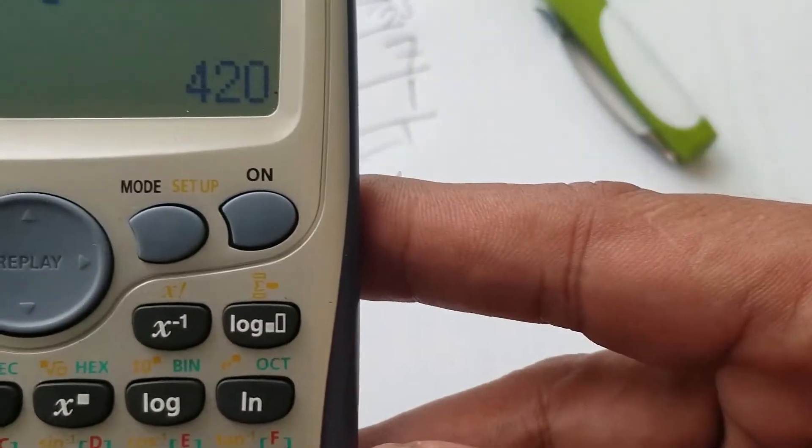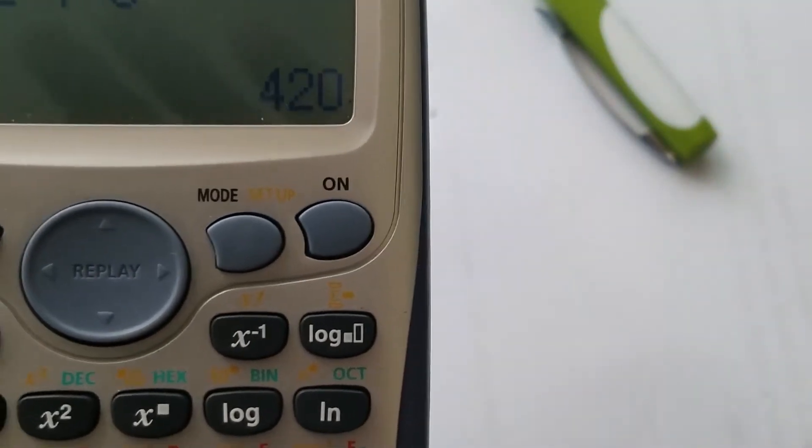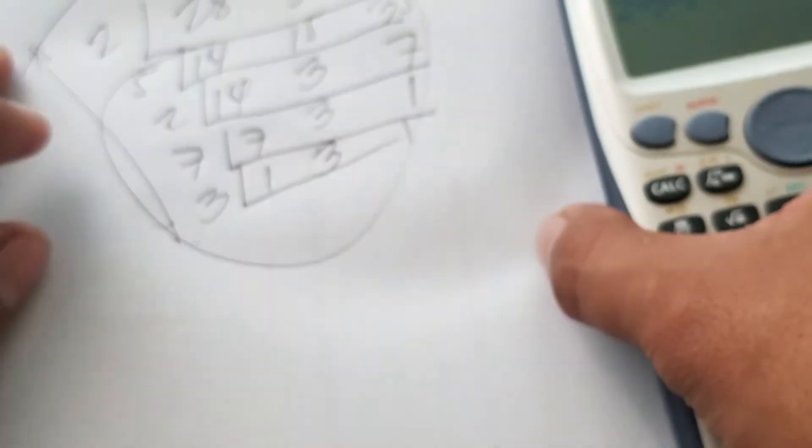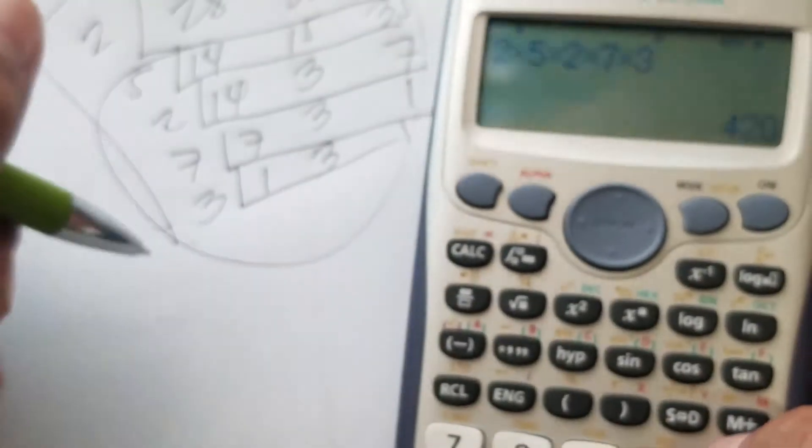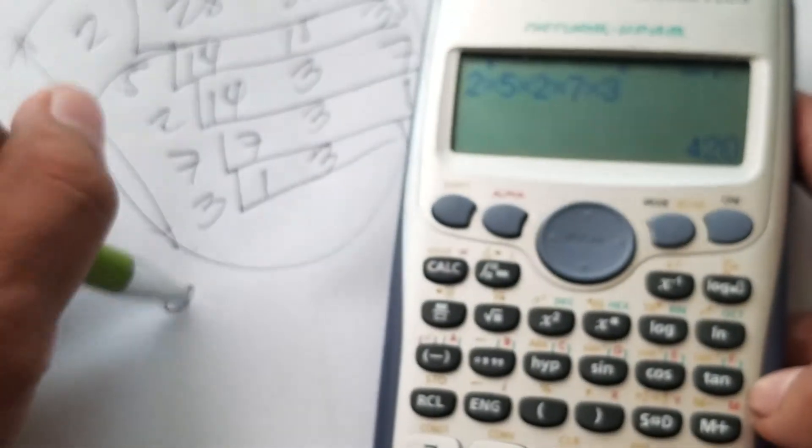and we have 420. Okay, but here's the thing, I'm not going to use this technique. I'm going to use the calculator technique. So this is how you do it. Remember it's 420, so let me write here 420.